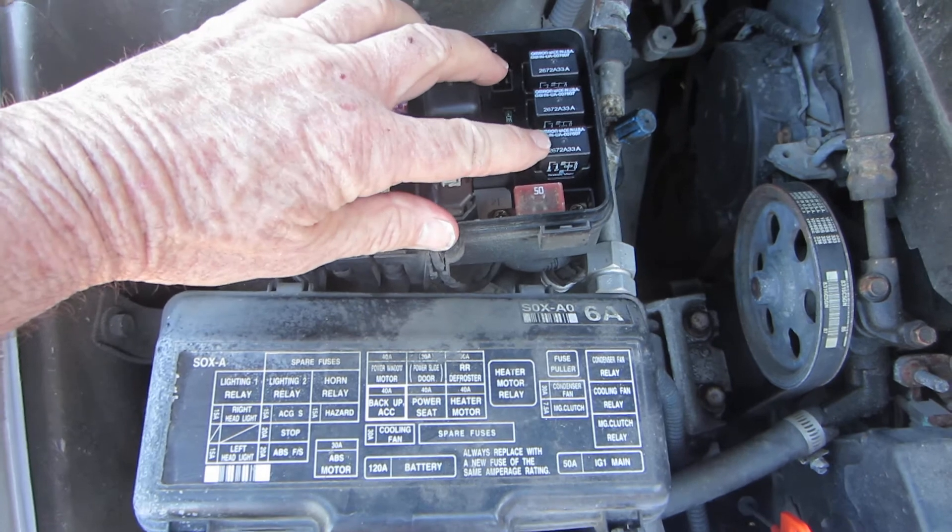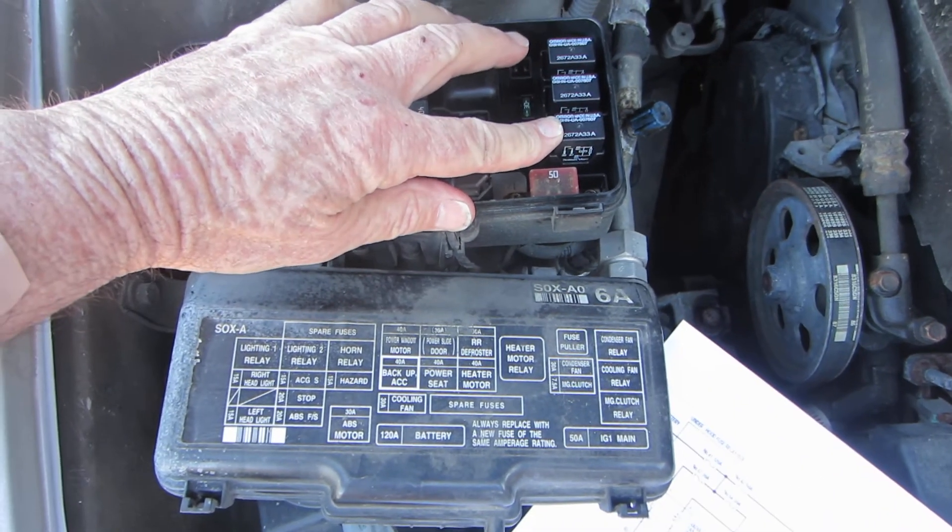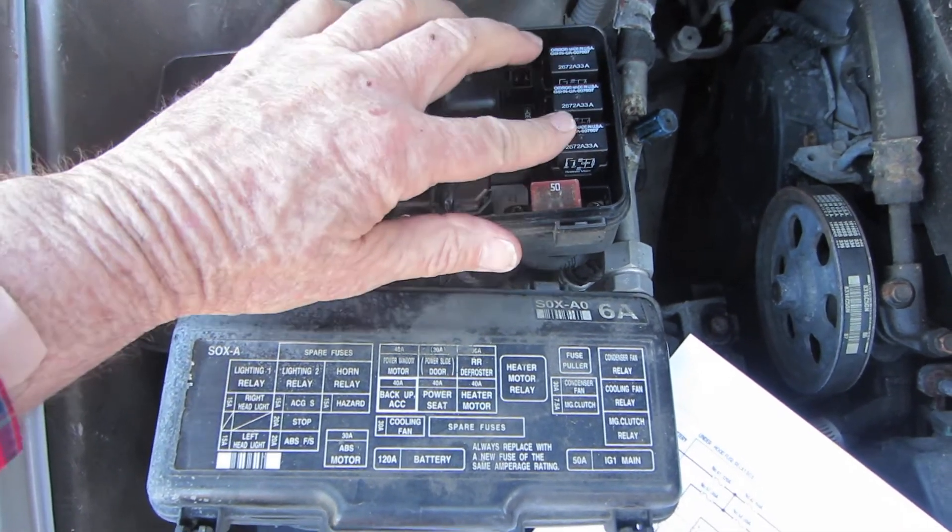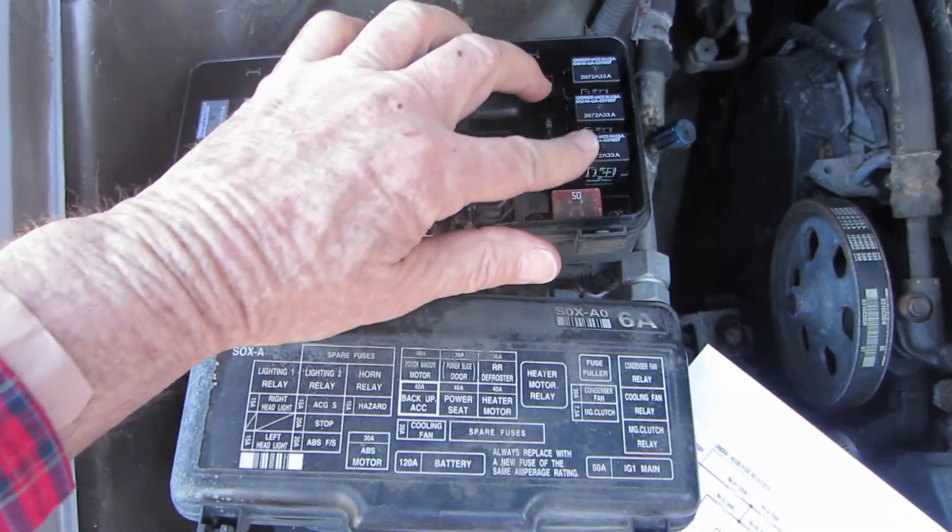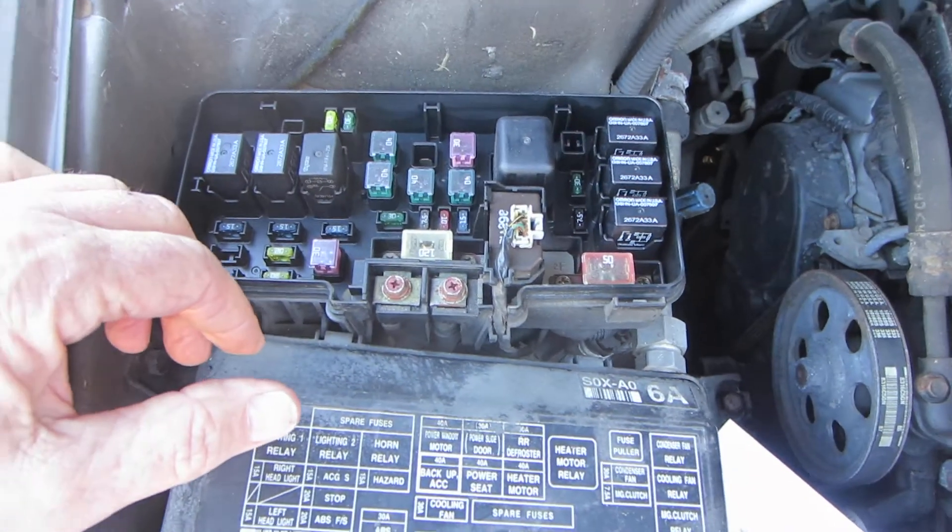This is the magnetic clutch relay right here. Now all these relays are the same so you can switch them back and forth from what I understand to see if you've got a bad relay.